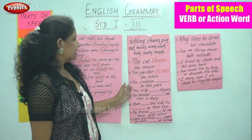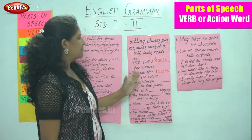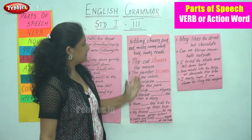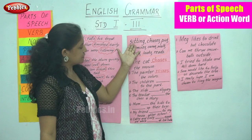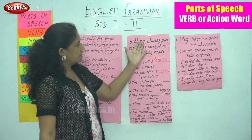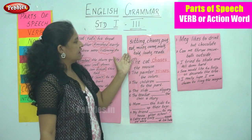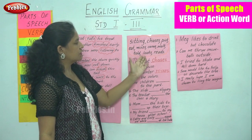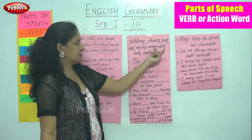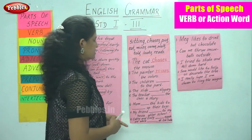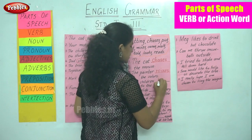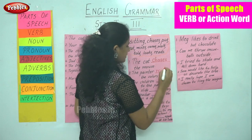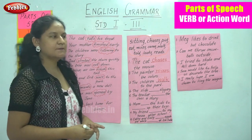Next sentence: 'The children ___ to the park.' Looking through the verb list — sitting, chases, pick, eat, mixes, came, told, looks, reads — we take the word walk. So: 'The children walk to the park.' Walk becomes the verb.